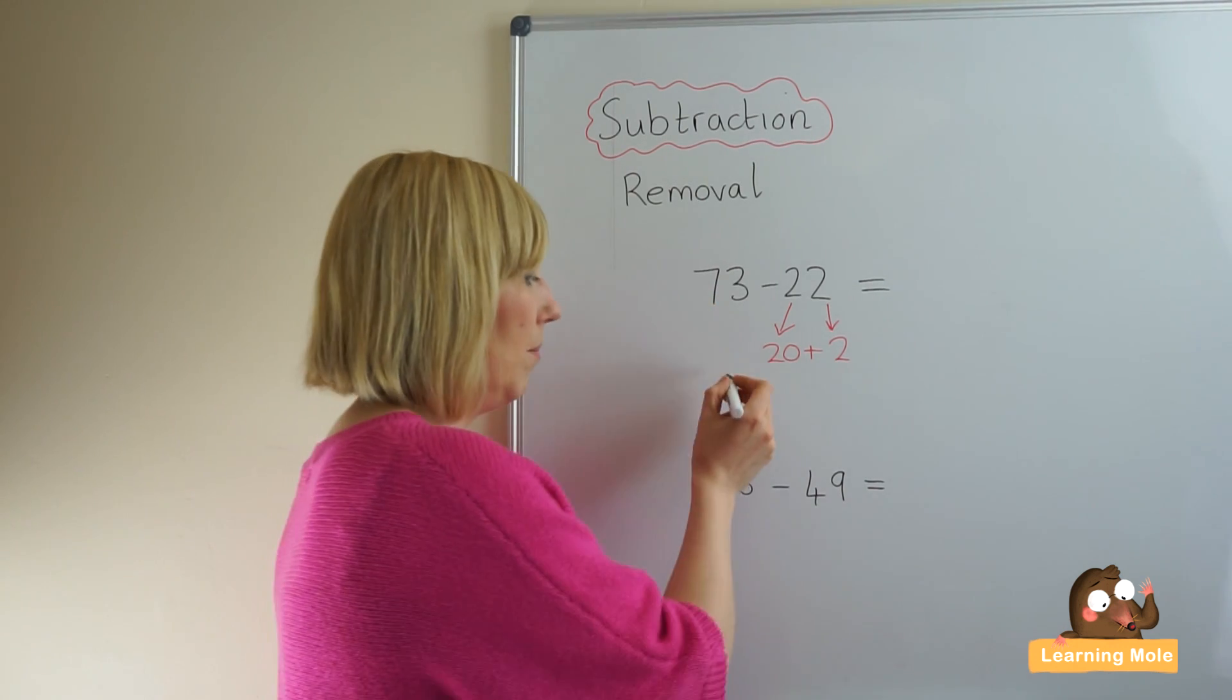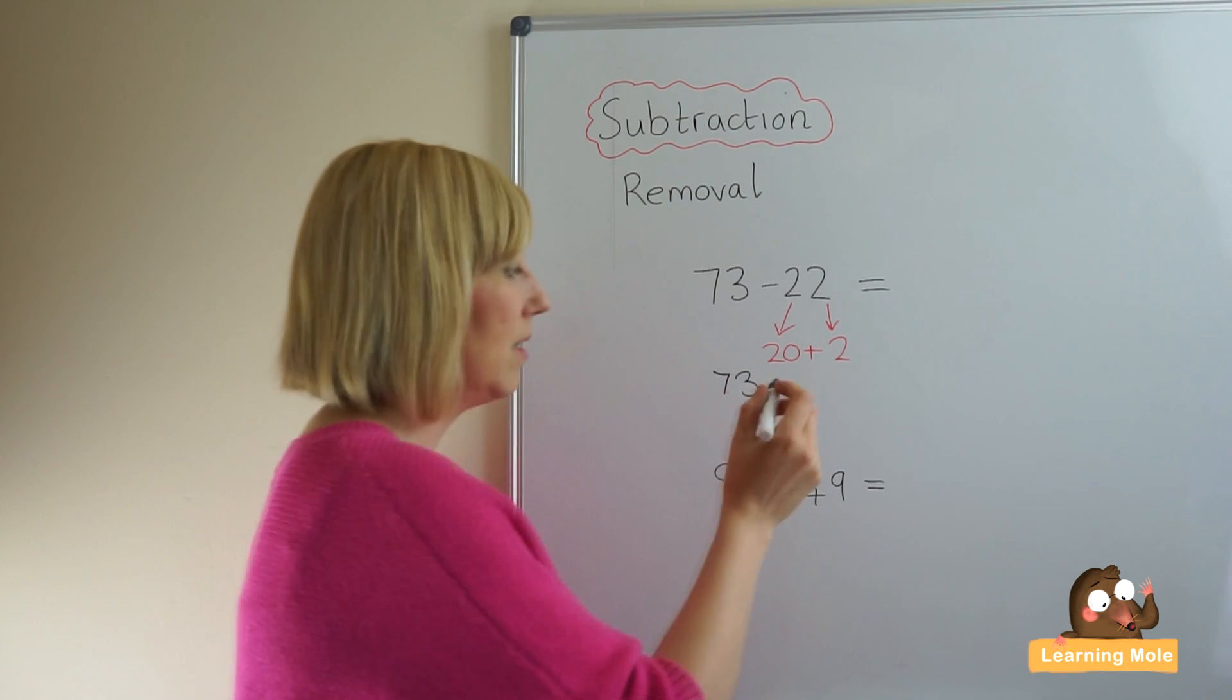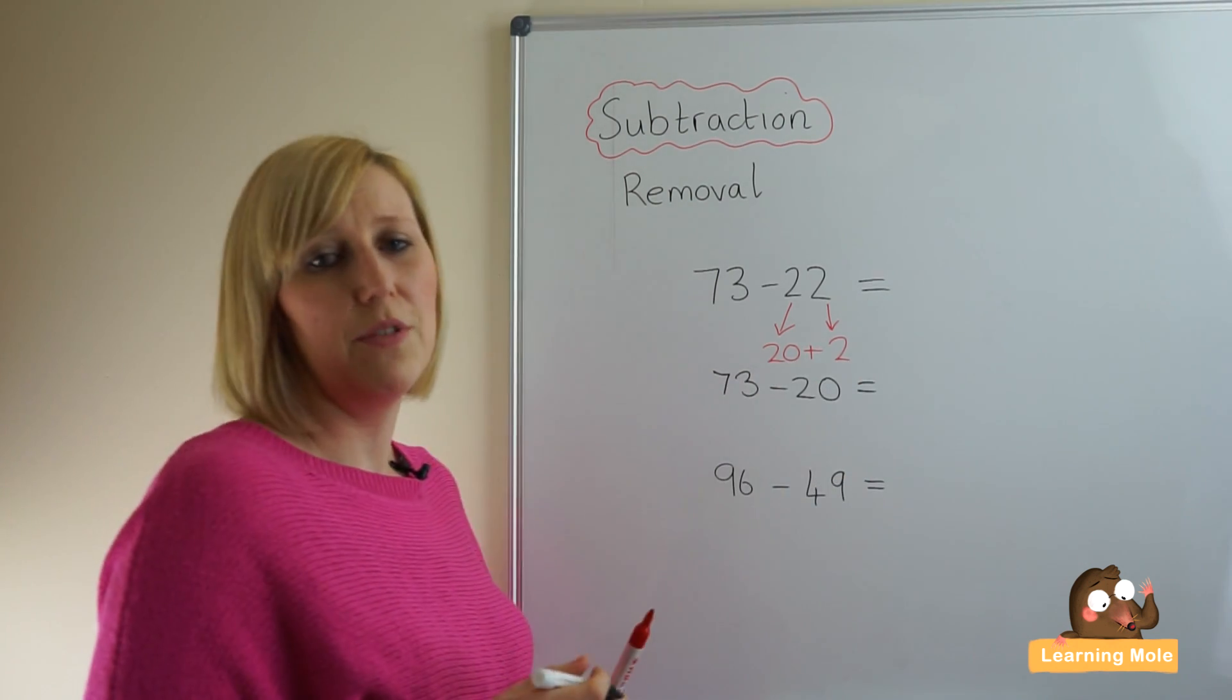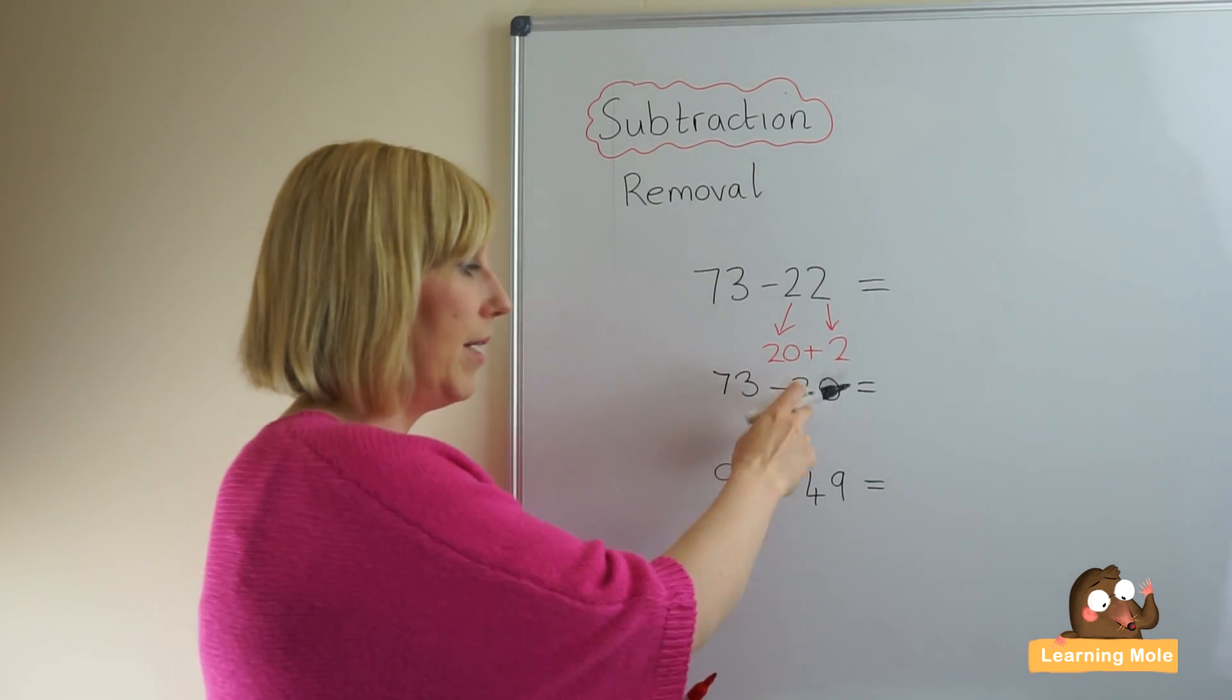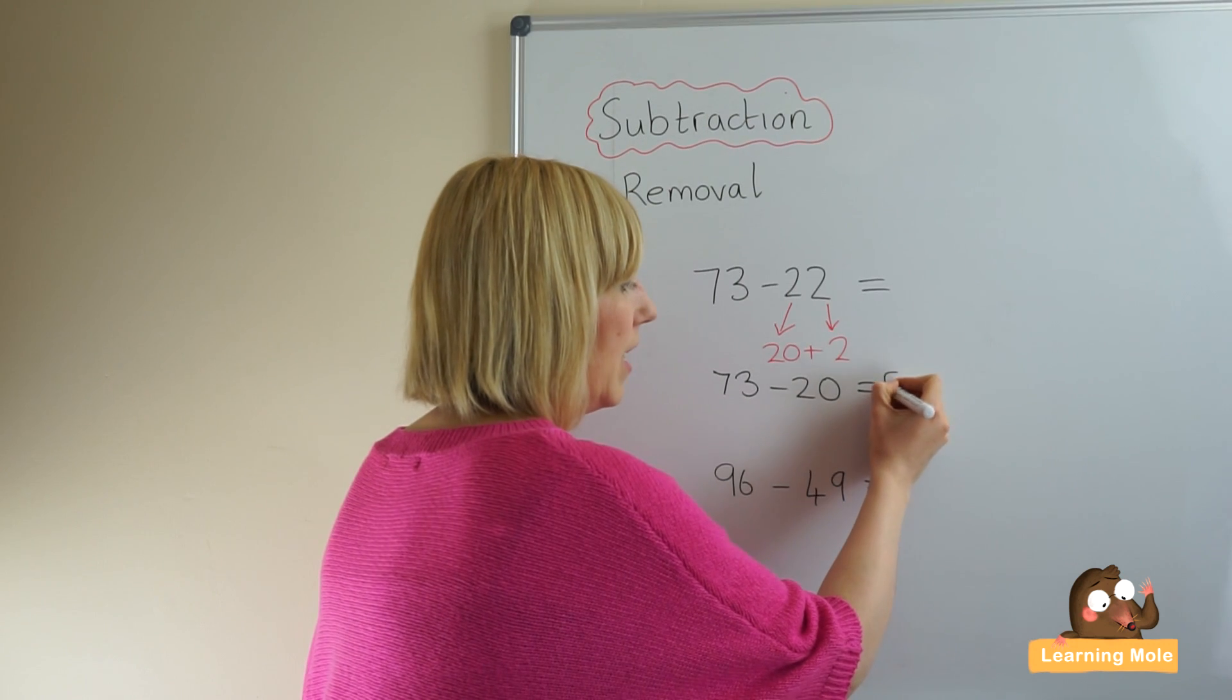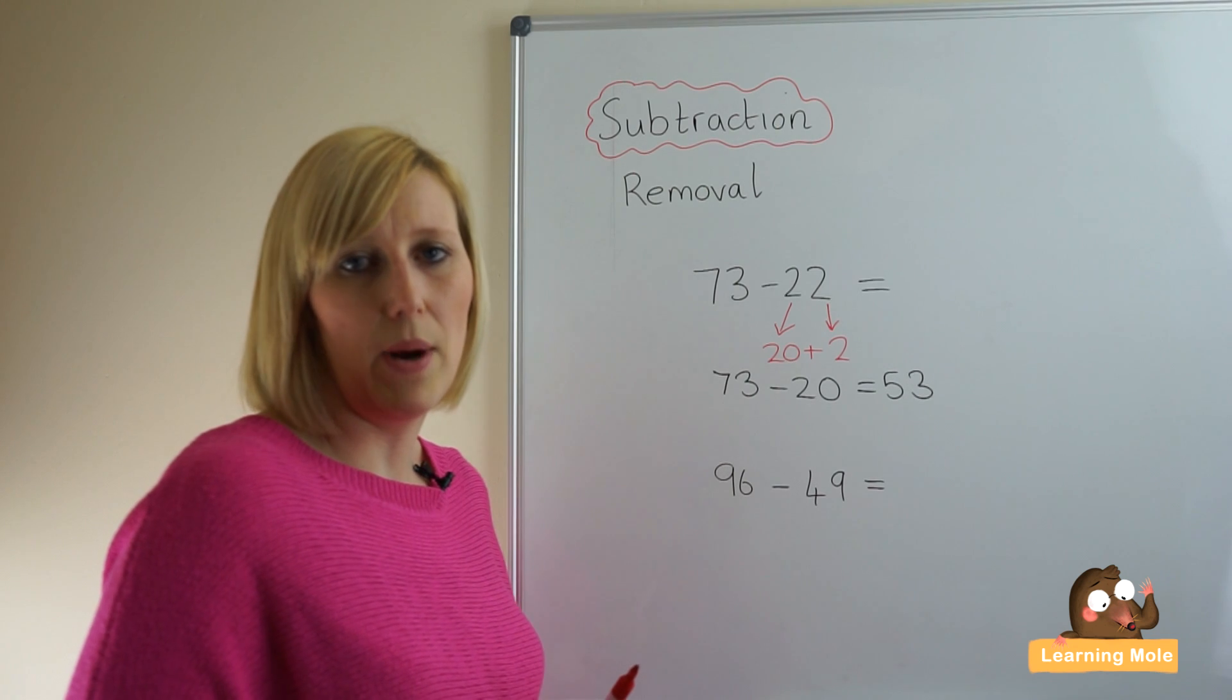We're going to start with our biggest number and we're going to first of all remove our tens number. Here we can use our known facts: seven take away two is five, so we know that that is 50, and of course our units stay the same because we have no units to take away.